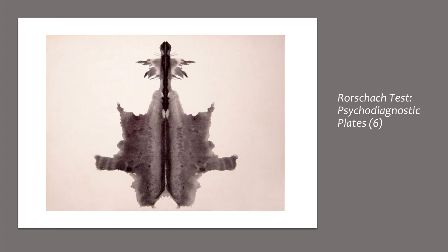Texture is the dominant characteristic of card six, which often elicits associations related to interpersonal closeness. It is specifically a sex card, with sexual percepts being reported more frequently than any other card, even though other cards have a greater variety of commonly seen sexual contents. Similar to plate four, the most popular responses were related to animal hides and skins.